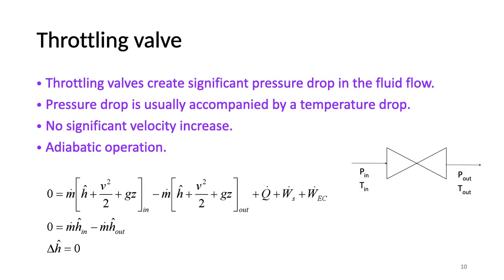Throttling valves. Throttling valves create significant pressure drop in the fluid flow and this pressure drop is usually accompanied by a temperature drop. These valves are used in refrigeration and air conditioning applications in order to obtain the temperature drop of the working fluid. There is no significant velocity increase through the valve and it operates adiabatically. There is no expansion contraction work or shaft work. So, for valves, inlet enthalpy is equal to outlet enthalpy.